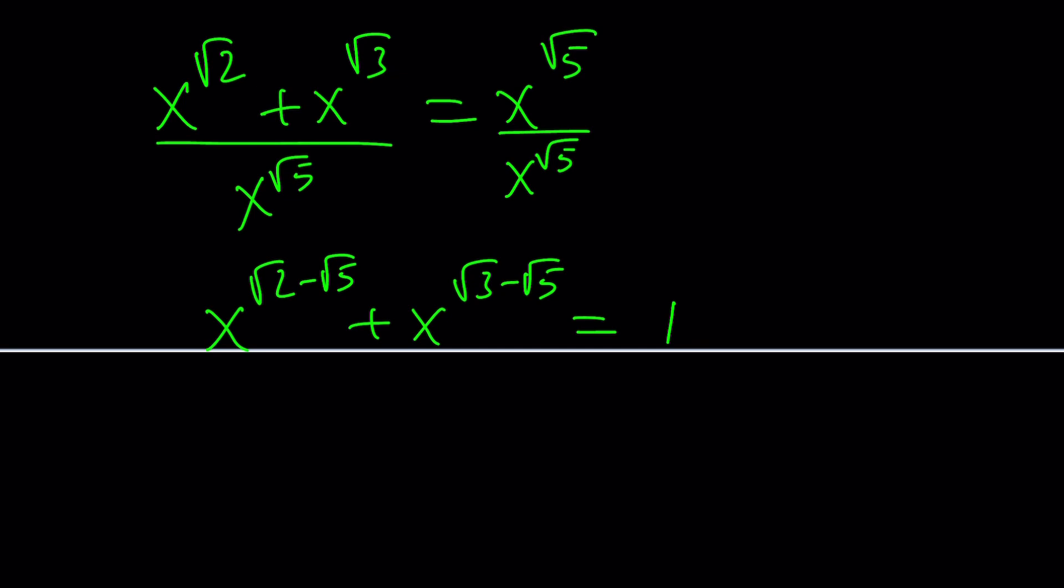You hopefully know the difference between transcendental numbers and algebraic numbers, which are two categories of irrational numbers. They're very different. Pi is transcendental, square root of 2 is algebraic. Anyways, this is pretty non-standard. How do you go about solving it?